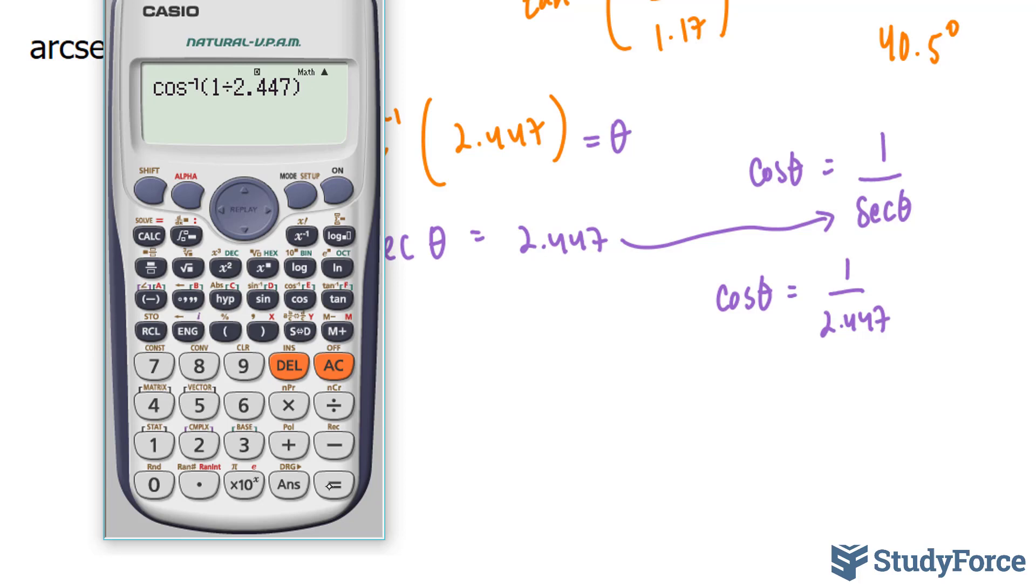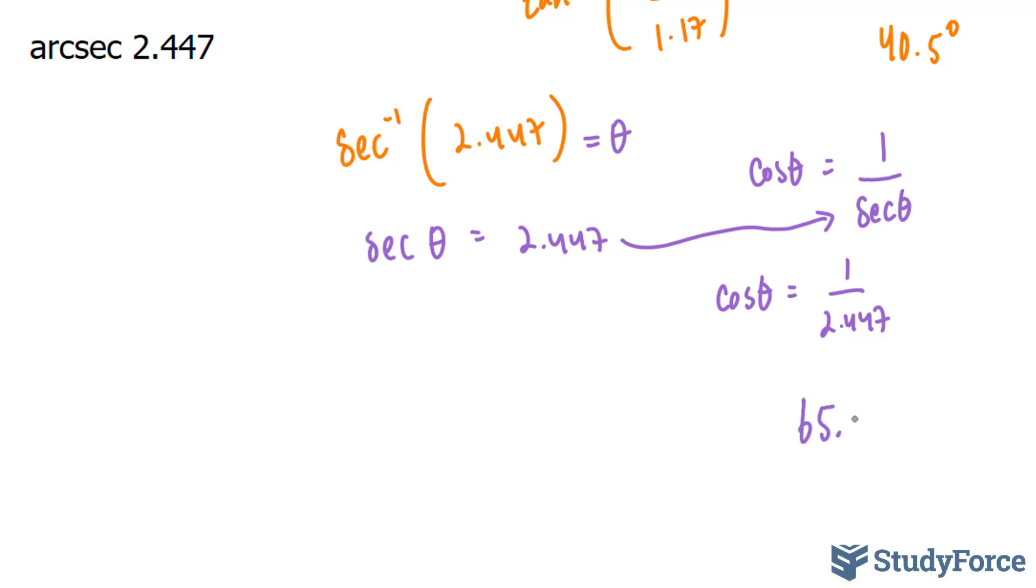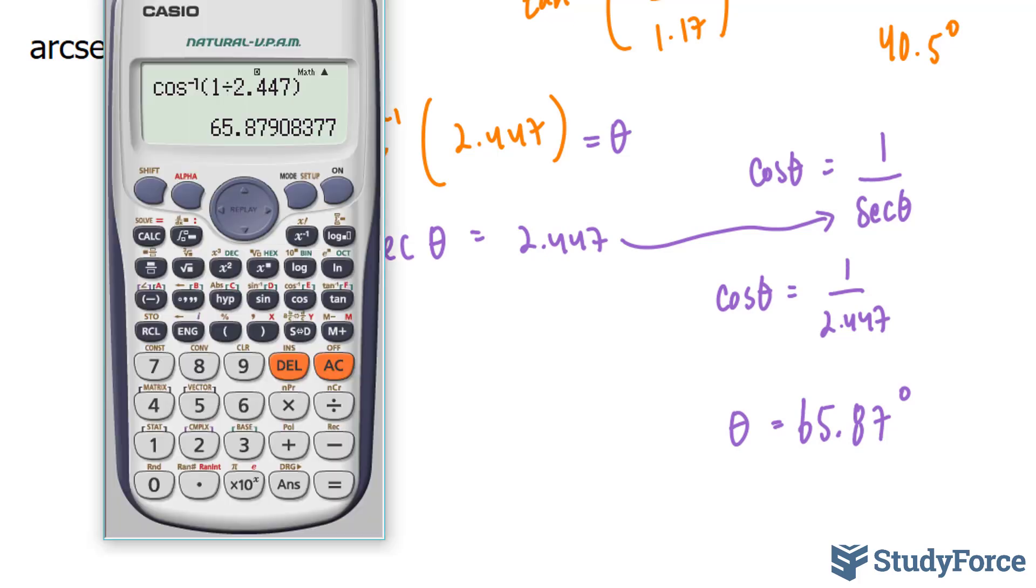Shift cosine 1 over 2.447 is equal to, now notice it's cosine inverse, and we end up with 65.87 degrees, 65.87 degrees. And that's equal to theta. And theta, if we retain the correct number of significant digits, we have to go back in our calculator.